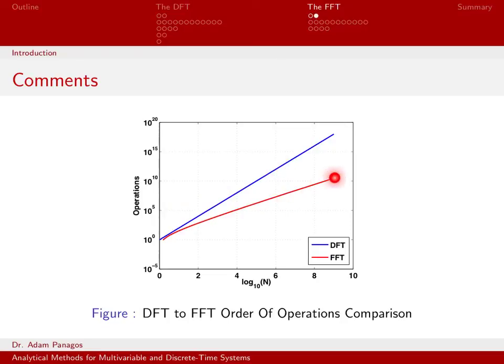As you go further out in signal length, that gap continues to widen — the FFT takes around 10 to the 10 operations while the DFT is up to around 10 to the 17, a difference of 7 orders of magnitude. This is why we like the FFT: when dealing with long signals, it scales much better and will be significantly faster than a brute force DFT operation.